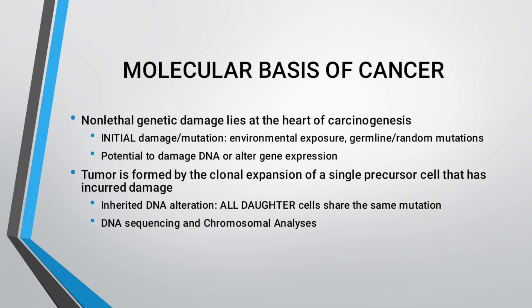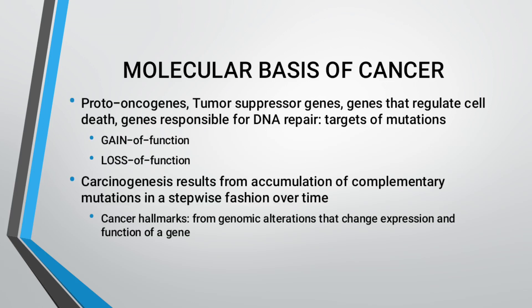The molecular basis of cancer: non-lethal genetic damage lies at the heart of carcinogenesis. Initial damage or mutation comes from environmental exposure, germline mutations, or random mutations — with potential to damage DNA or alter gene expression. Tumors are formed by the clonal expansion of a single precursor cell that has incurred damage. Inherited DNA alterations or altered cells share the same mutation, detectable by DNA sequencing and chromosomal analysis. Proto-oncogenes, tumor suppressor genes, genes regulating cell death, and genes responsible for DNA repair are the targets of mutation — gain of function or loss of function.